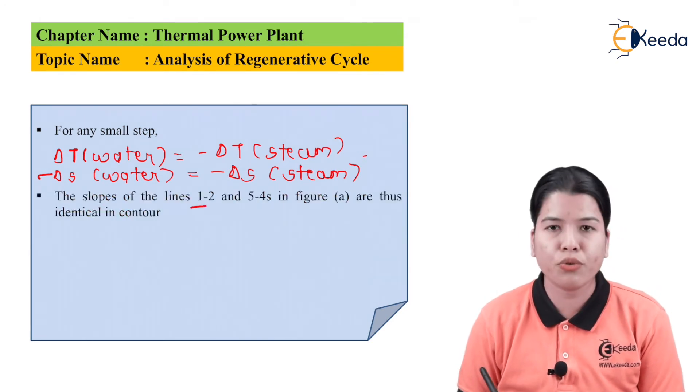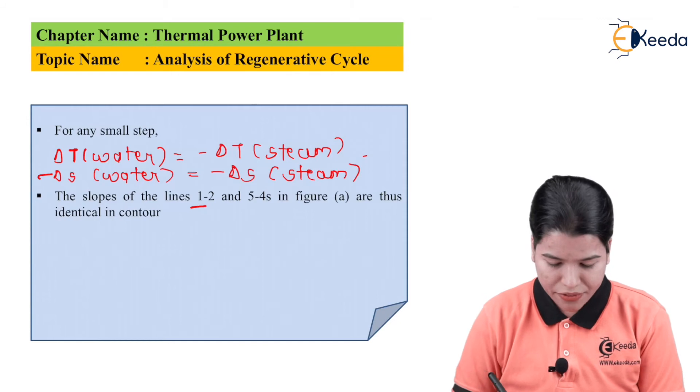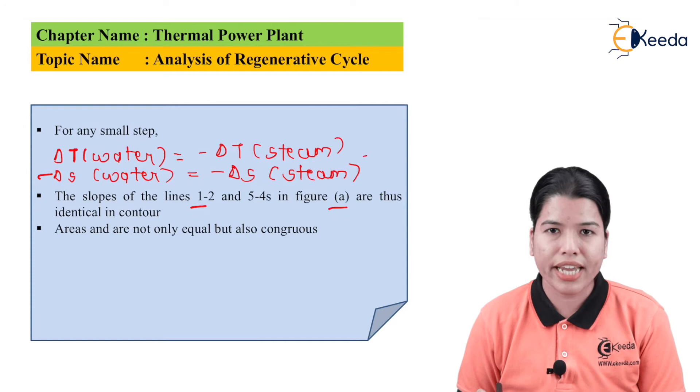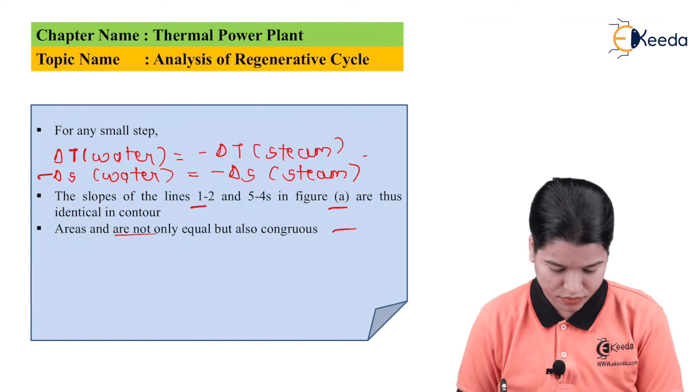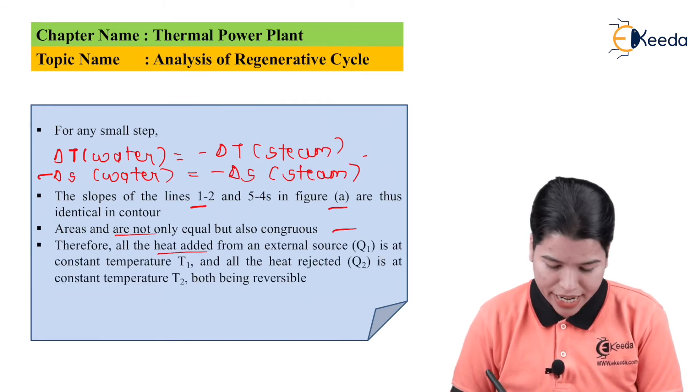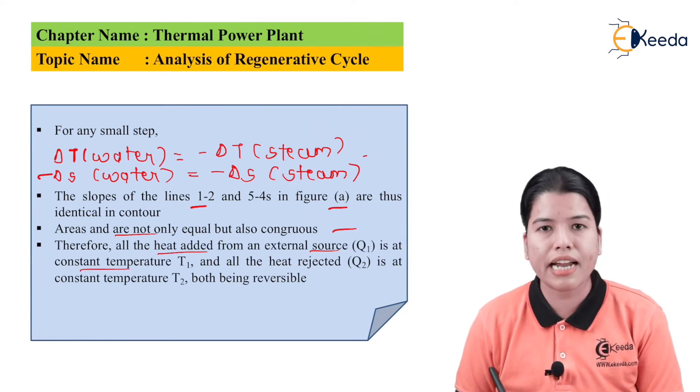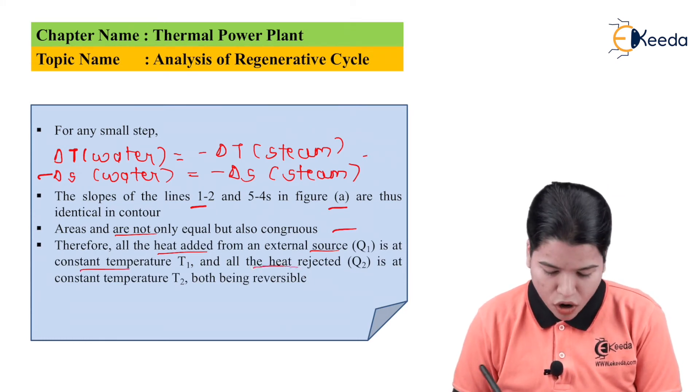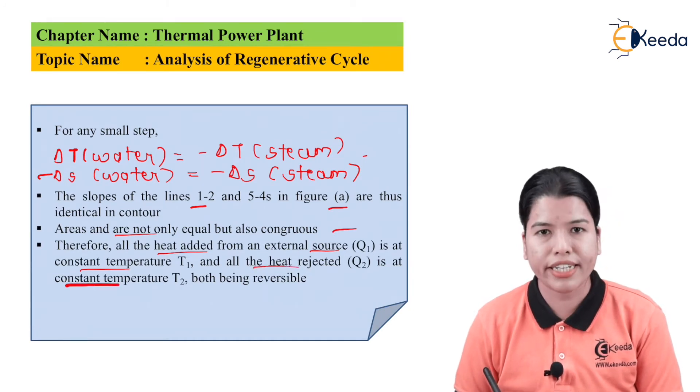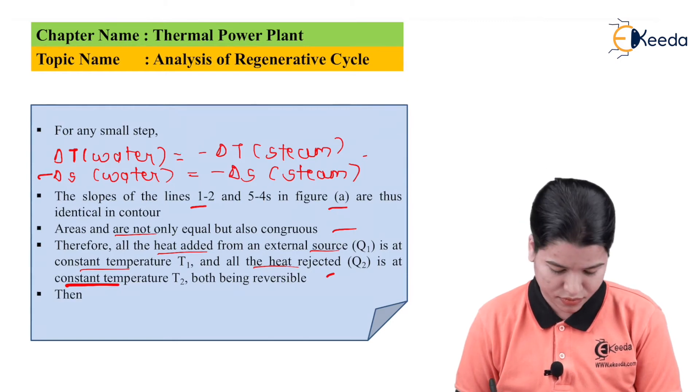Now, the slope of the lines 1-2 and 5-4s in figure A are thus identical in contour. The areas are not only equal but also congruous. Therefore, all the heat which is added from an external source, Q1, is at constant temperature T1, and all the heat which is rejected, Q2, is at constant temperature T2, and both are reversible.